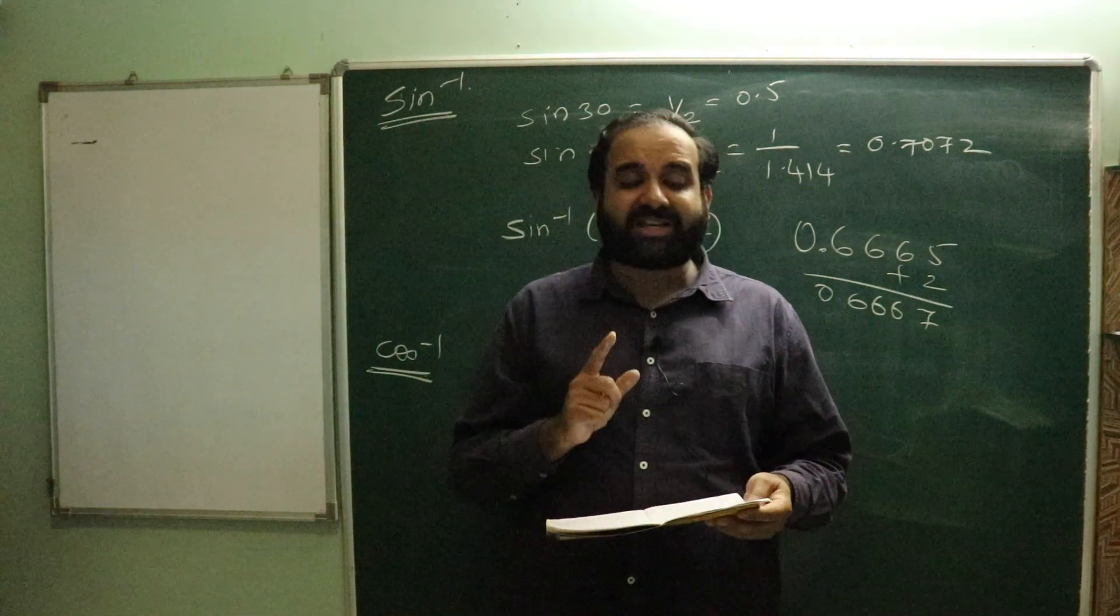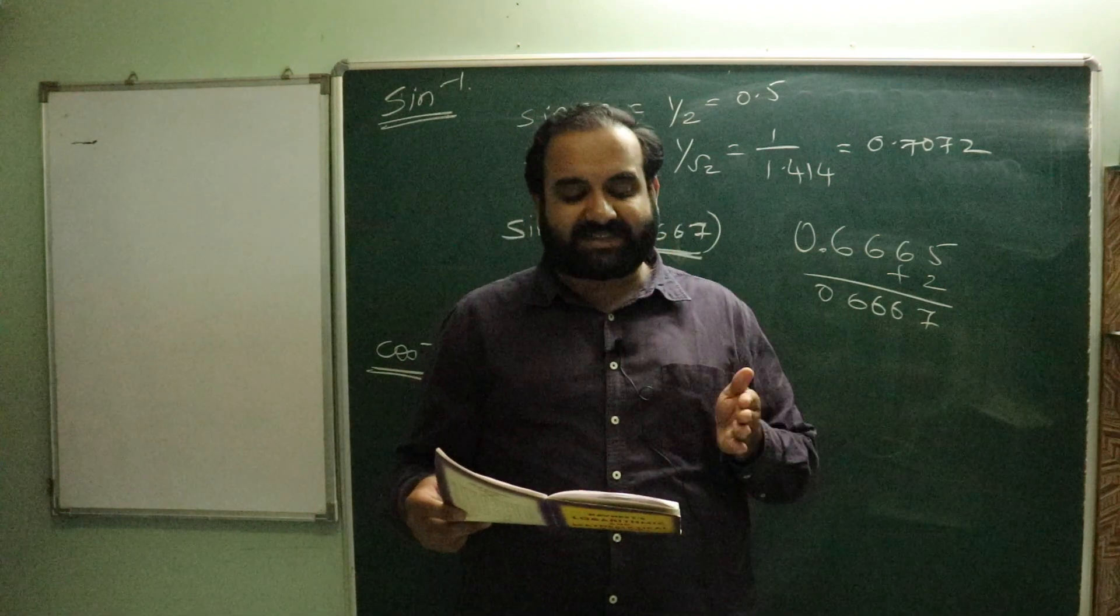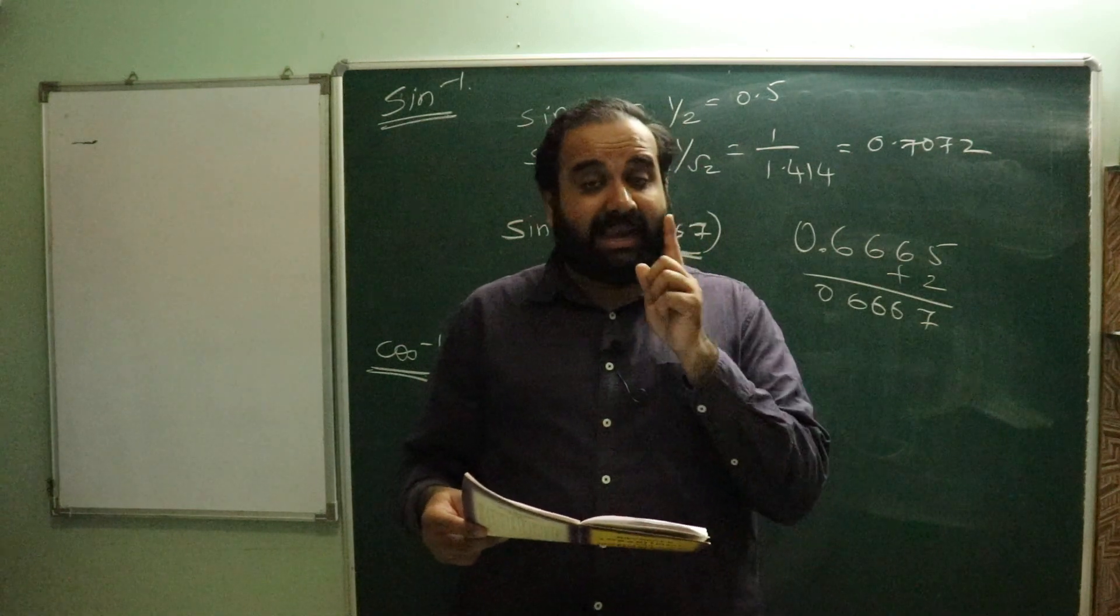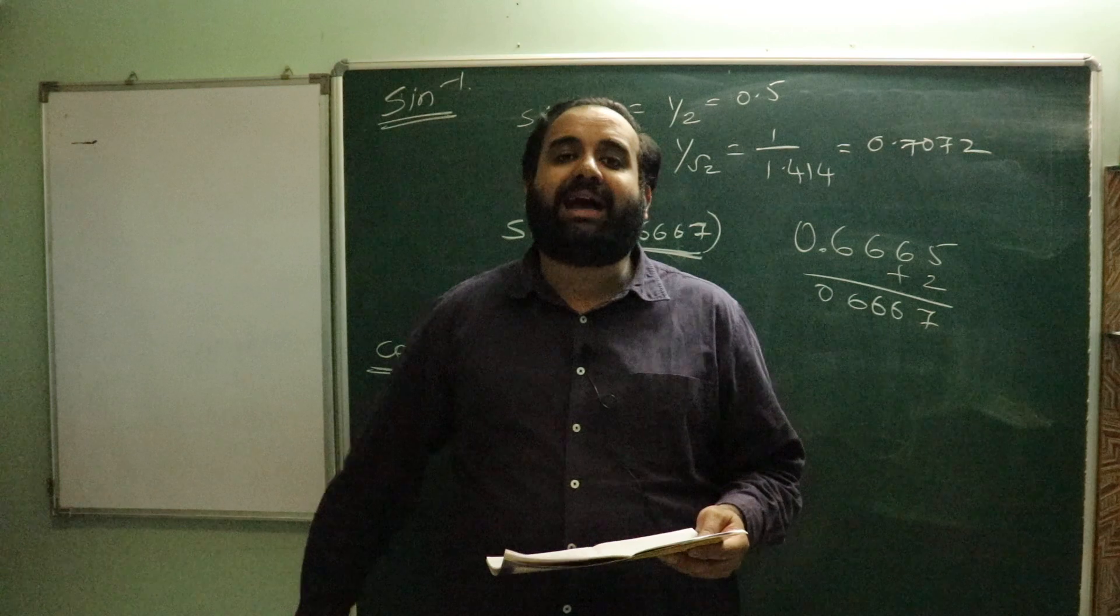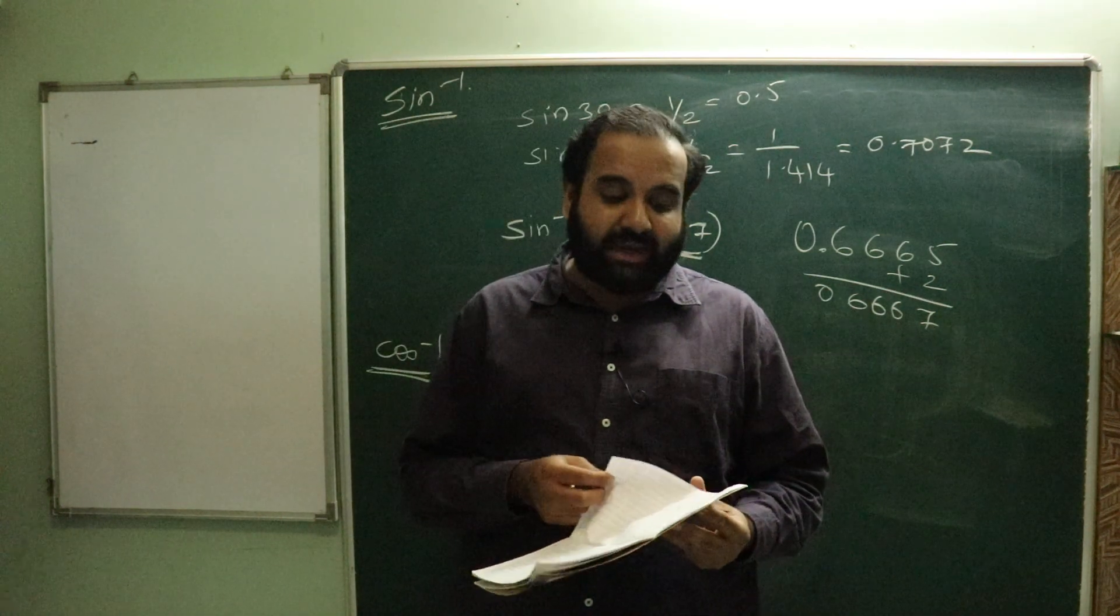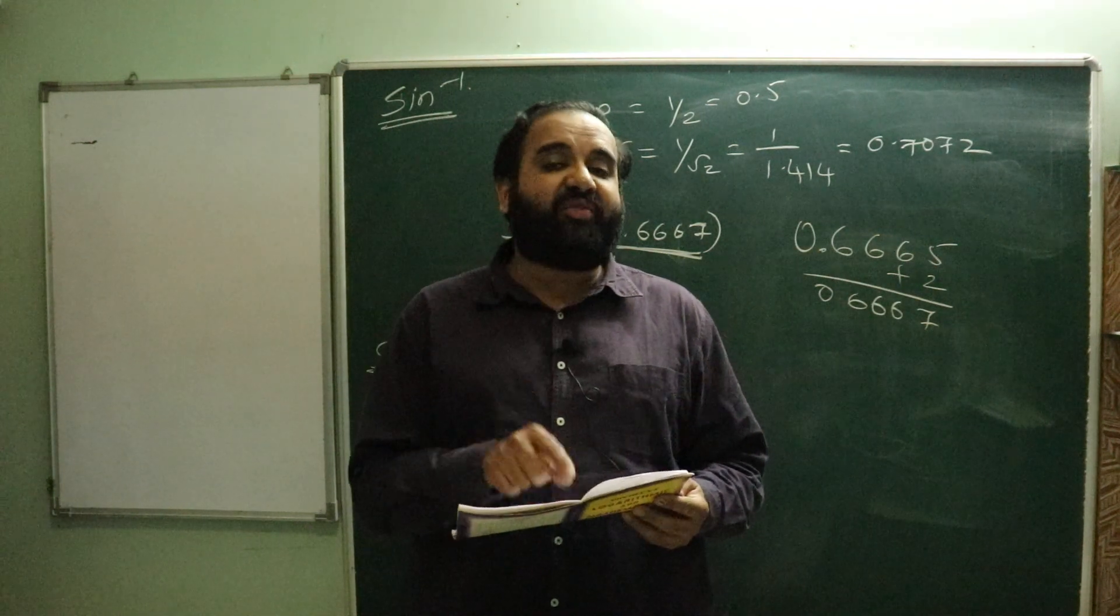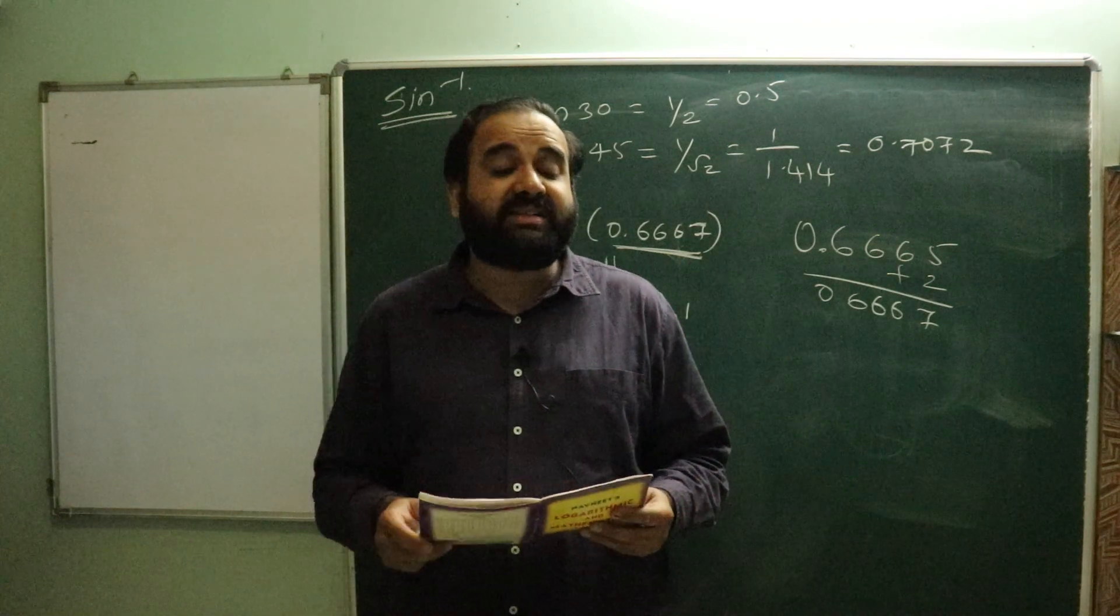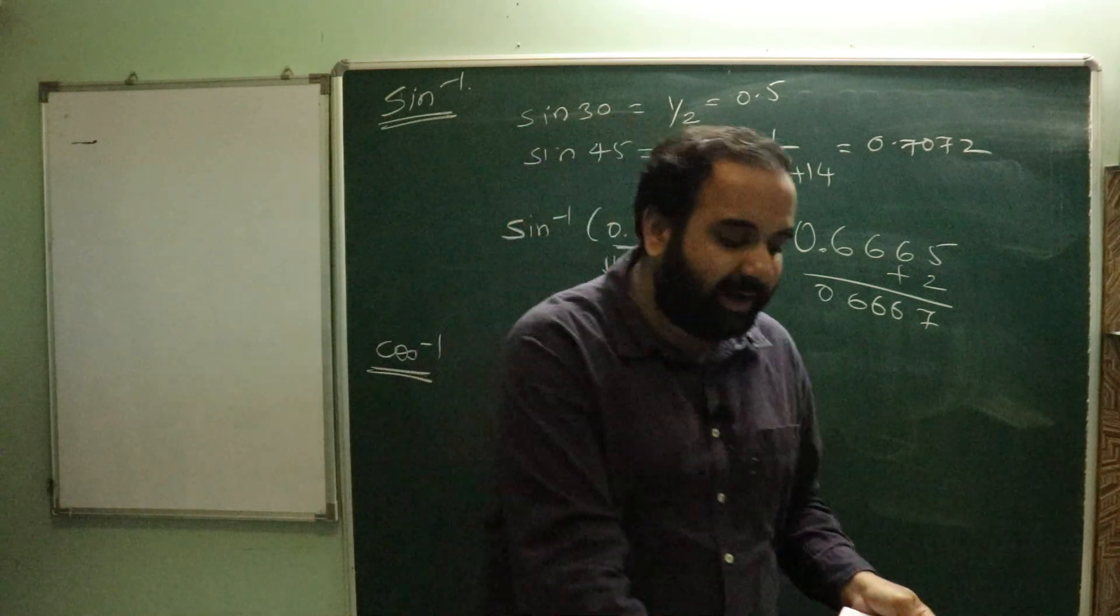Let's look at the natural cosines table again. On the left side, all the degrees are there from 0 degrees to 89. Is this clear to y'all? But in this, one very important thing we have to remember - what is the biggest difference between sine and cosine? Look at the mean difference. Just below mean difference, what is written? It is written 'subtract'.